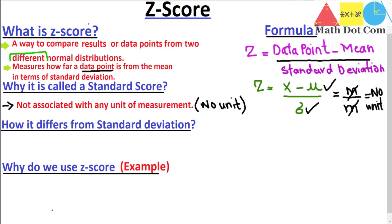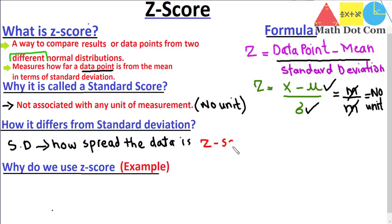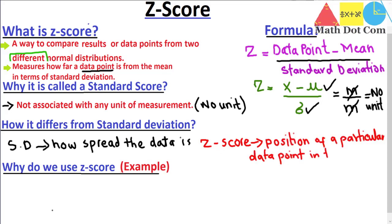Some people ask how z-score differs from standard deviation. Standard deviation tells you about how spread the data is overall, while z-score tells you the position of a particular data point within the distribution in terms of standard deviation. Standard deviation tells you about a group of data that falls in the first or second standard deviation and so on, whereas z-score tells you specifically how many standard deviations a particular data point is away from the mean.